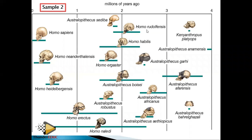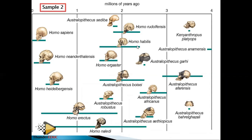Another question: which species competed for resources with Homo sapiens? You draw a horizontal line across at the Homo sapiens level and find which species overlapped — Homo neanderthalensis was there. To find how many million years Homo habilis existed, draw a line at its start and a line at its end, then find the difference.